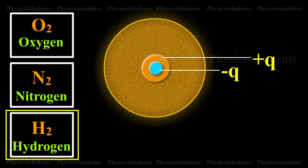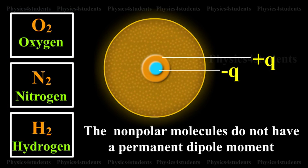Example, O2, N2, H2. The non-polar molecules do not have a permanent dipole moment.